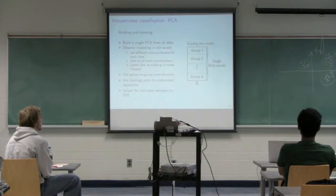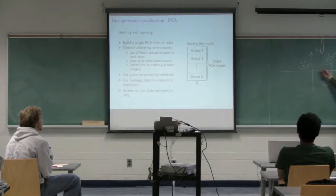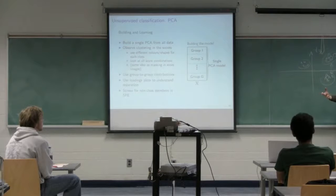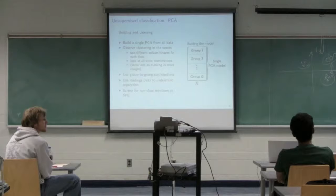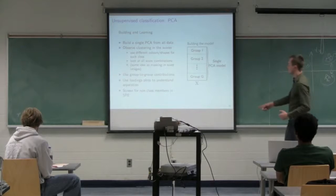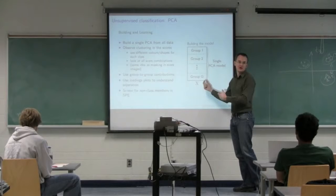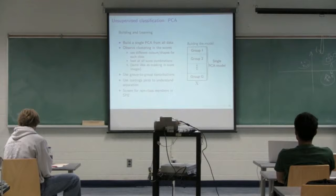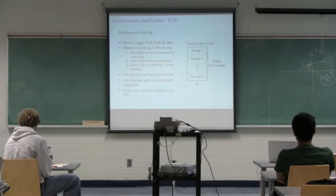The contribution plot tells us which variables are most associated with a shift in the score space, going back to the original X variables. It's one thing to see separation in T3, but you can't tell your boss that things are different because they show differently in T3. We need to convert back to real-world observations — which of the K columns are most associated with that particular change. Any cluster in the score plot can be investigated with group-to-group contributions or loadings.